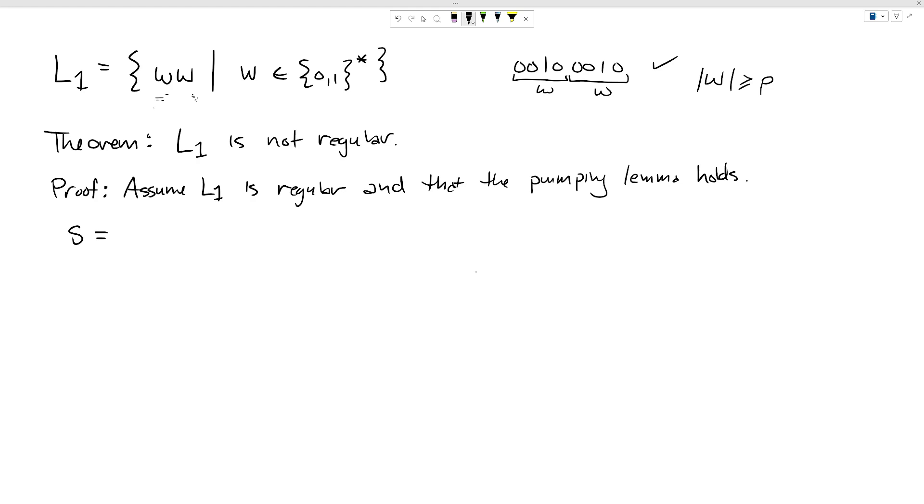Now, again, lots of degrees of freedom here. One of the possibilities we might pick here is we could say W is 0 to the P. So we would have 0 to the P, 0 to the P, or 0 to the 2P. Now, the problem with this string is this particular choice of string is actually pumpable. There are ways that we can divide it up into X, Y, and Z. In particular, if we make Y two zeros, then every time we pump it, we will always get an even number of zeros, and it will always satisfy this condition and always be a member. So this is a slightly harder language to work with because we pick a pretty obvious string, and it doesn't work. This string is pumpable.